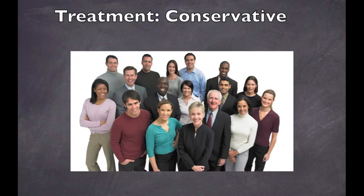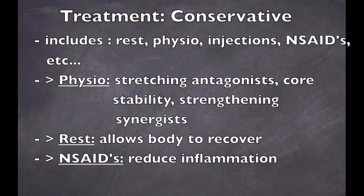First off, we have conservative management. Conservative methods of treatment are mostly used when the patient is showing the first signs of osteitis pubis, or for the general population due to the fact that they won't be performing high-intensity exercises that will exacerbate the condition. For athletes with a chronic condition, surgery is recommended for a quicker return to play. Conservative methods include rest, physiotherapy, non-steroidal anti-inflammatory drugs, corticosteroidal pubic injections, ultrasonography, radiation therapy, anticoagulation, oral glucocorticoids, and intravenous pamidronate. While these techniques are not proven to work for all patients, some are more reliable than others.